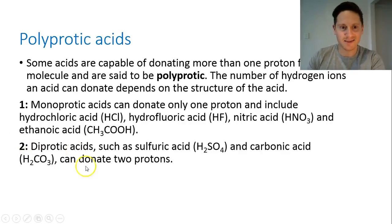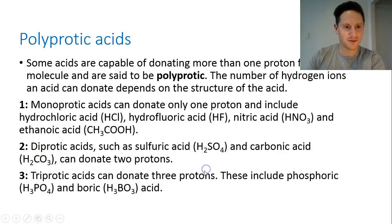Diprotic acids, as you might guess, so di meaning two, will donate two protons. Examples of that are H2SO4 and H2CO3. They're going to donate two protons. And the last section is triprotic acids. They can donate three protons. Examples of these are phosphoric acid and boric acid.